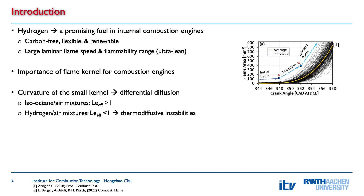A challenging and interesting aspect of hydrogen flames is the differential diffusion effects, which is particularly important for small flame kernels due to global curvature. For conventional hydrocarbon fuels, for example isooctane, the effective Lewis numbers are larger than unity, and differential diffusion typically shows a stabilizing effect and suppresses the growth of flame kernels. In contrast, for lean hydrogen flames, the effective Lewis number is smaller than unity; differential diffusion enhances the growth of flame kernels and can even lead to thermodiffusive instabilities.